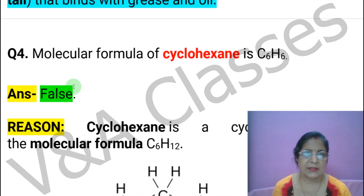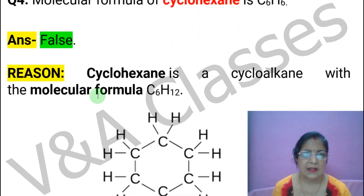Next statement: The molecular formula of cyclohexane is C6H6. This statement is FALSE. The reason is: cyclohexane is a cycloalkane with the molecular formula C6H12.